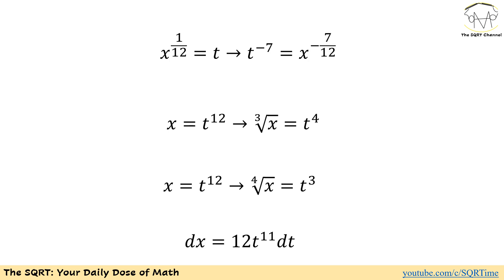I'm going to start with the substitution t equals x to the power of 1 over 12. Then t to the power of negative 7 equals x to the power of negative 7 over 12, which is what I had. Also, x equals t to the power of 12, the third root of x equals t to the power of 4, the fourth root of x equals t to the power of 3, and dx equals 12 times t to the power of 11 dt.